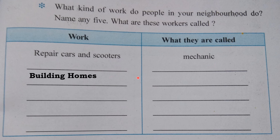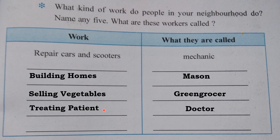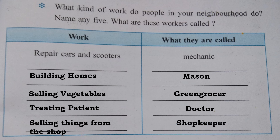Building homes — who builds our homes? The answer is masons. Next is selling vegetables — who sells vegetables? Grocers. Then next is treating patients — who treats patients? A doctor. Next, selling things from a shop — that person is a shopkeeper. So this way you can write down and note these answers in your notebook.